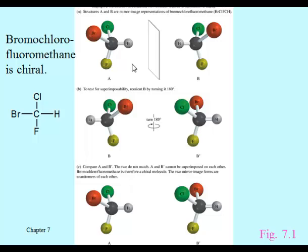That makes all the difference in the world, because when this tetrahedral molecule is compared to its mirror image on the right, we find that it is non-superimposable. It's all the same atoms, but their orientation in space is fundamentally different. They call A and B the two mirror image forms of this molecule, and taking molecule B — the right-hand image — and turning it around 180 degrees, they try to see if they can superimpose it on the original structure A.